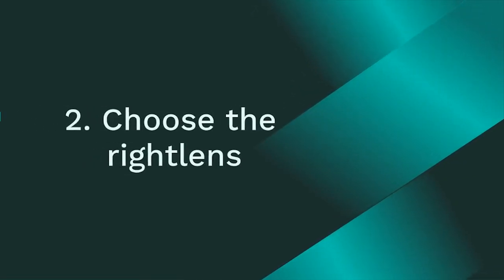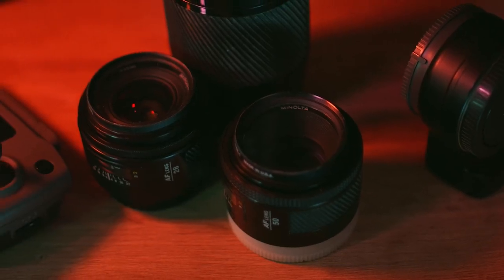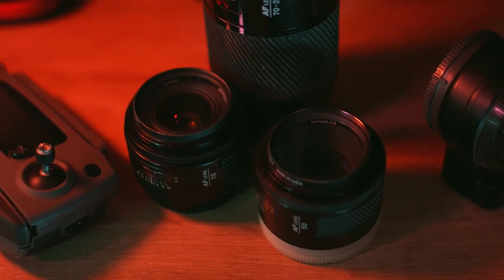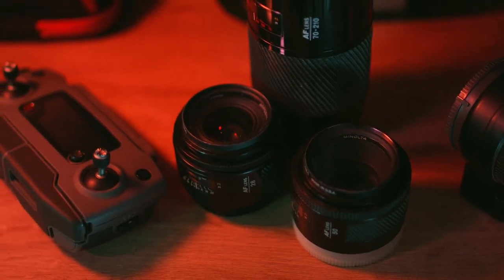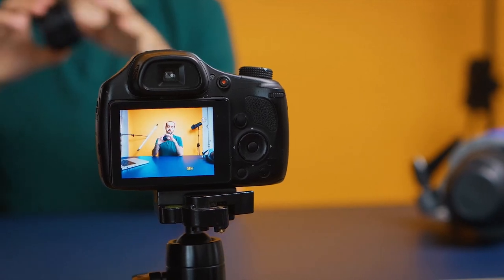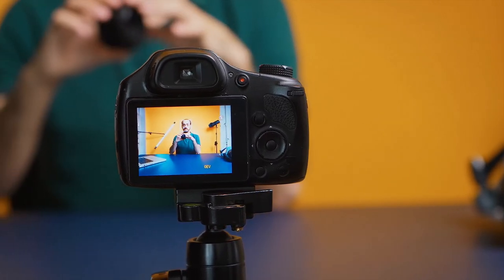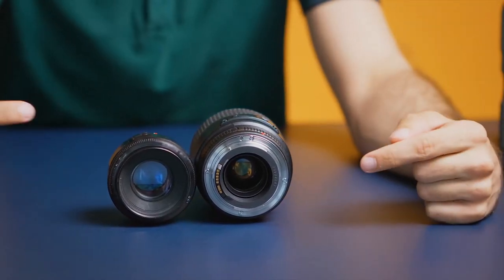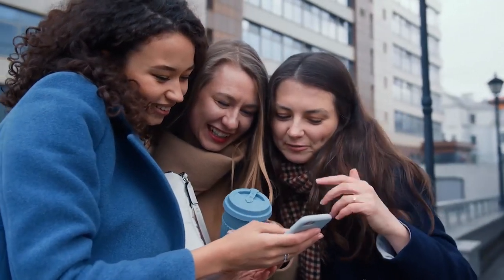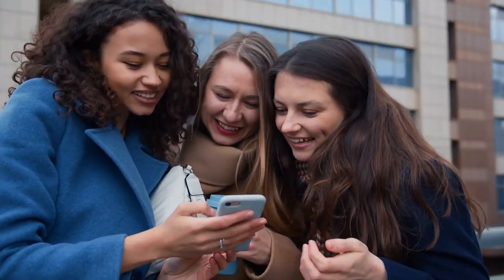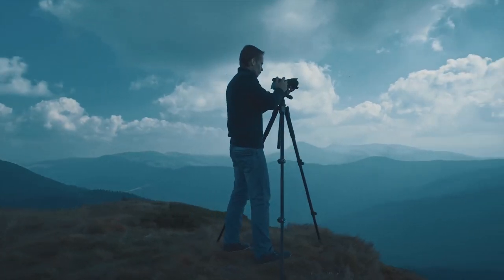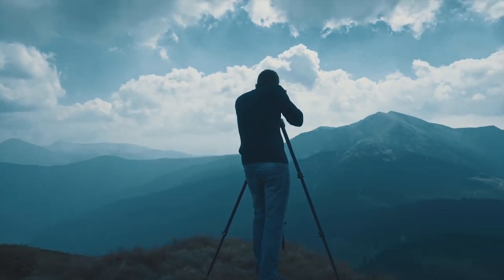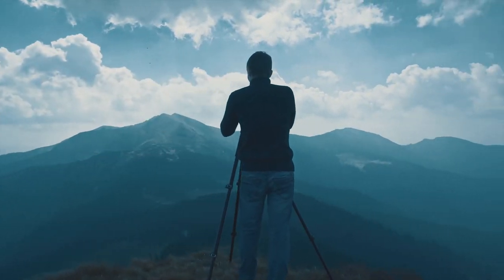Number 2: Choose the right lens. When it comes to choosing the right lens for your Sony A1 camera, the options can be overwhelming. But the key is to choose a lens that suits your specific content creation needs. If you're a vlogger, you'll want to consider a wide-angle lens to capture as much of your surroundings as possible. This type of lens is perfect for shooting in tight spaces, giving your viewers a sense of place and capturing more of the action around you. It's also ideal for capturing breathtaking landscapes, making your viewers feel like they're right there with you on your adventures.